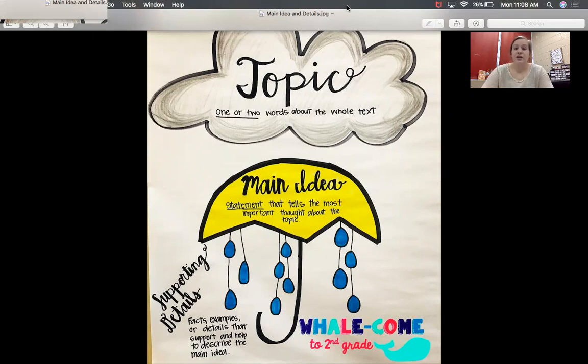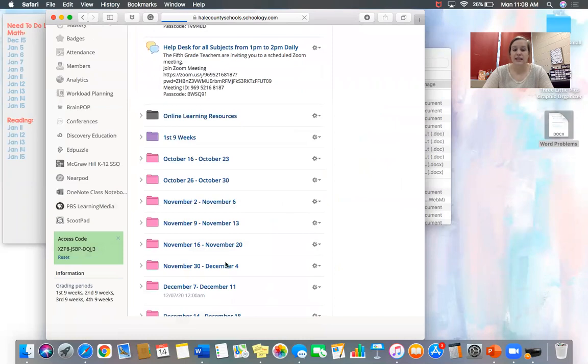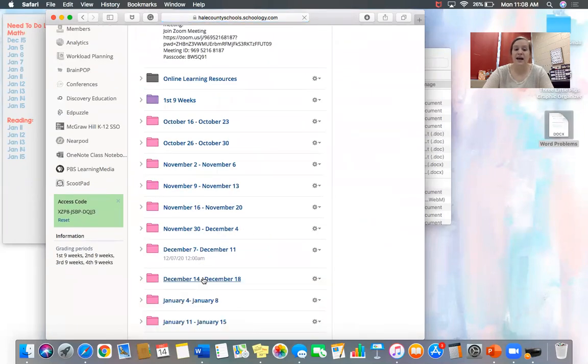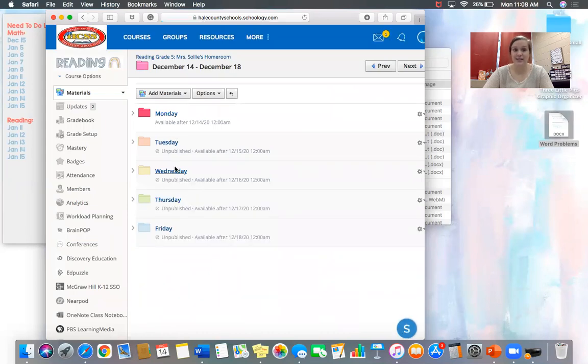So when you get to Schoology, you'll click on your reading course and then you will scroll down and find this week, which is the 14th through the 18th. So last week before Christmas break, it is crazy. You will click on Wednesday.